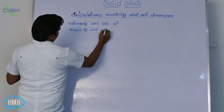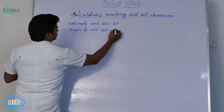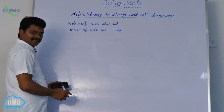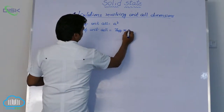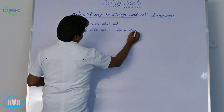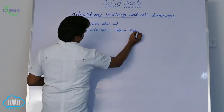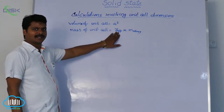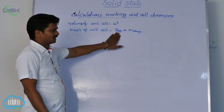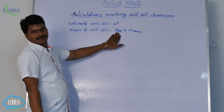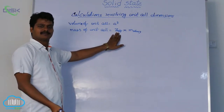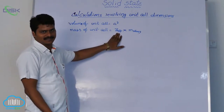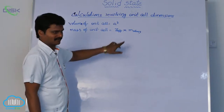Mass of unit cell is equal to the number of effective atoms in that unit cell multiplied by the mass of each atom. The effective number of atoms we can calculate — we discussed earlier how many effective atoms exist in a simple cubic system, in FCC, in BCC, and in HCP.